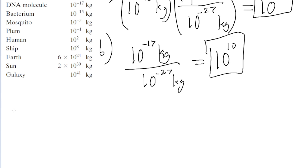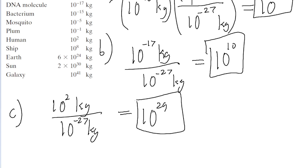Now for part C, for a human, which has a mass of 10 to the power of 2 kilograms, divide that by 10 to the power of negative 27, and we get 10 to the power of 29 protons or neutrons.